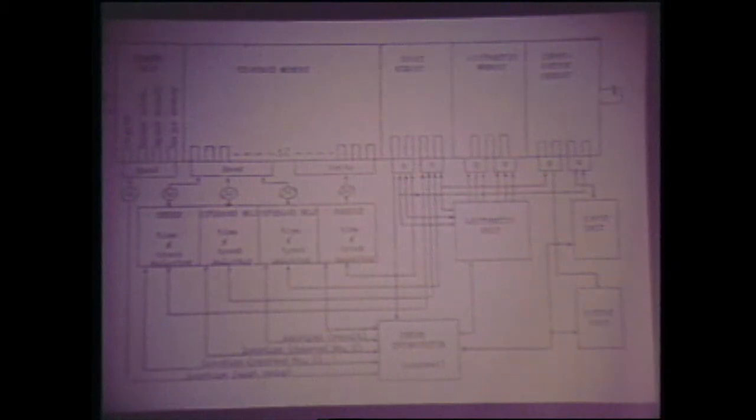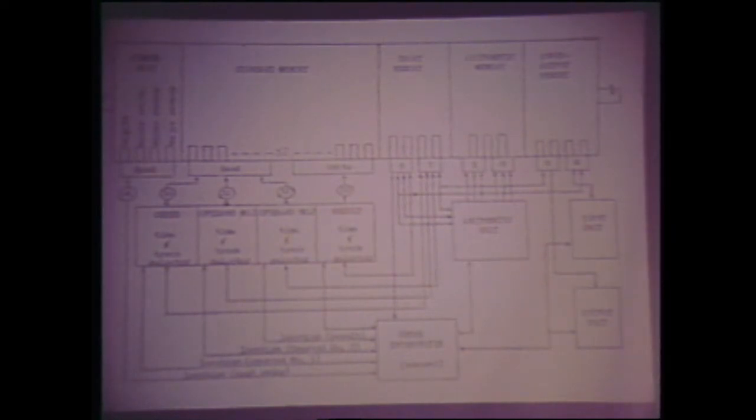This is a block diagram from my thesis. The machine was rather simple: a main memory of a thousand words, 32 words per track, 32 tracks. Each word was 50 bits long—40 bits of fraction, 8 bits of exponent, and 2 bits for the sign of the fraction and the exponent.